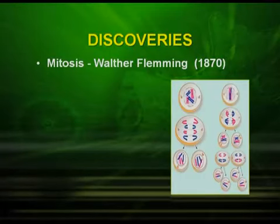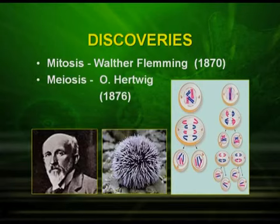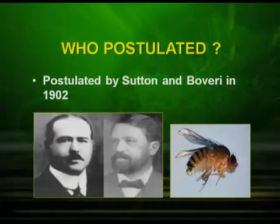Mitosis was discovered by Walther Fleming in 1870, and meiosis was discovered by O. Hertwig in 1876 in sea urchin. At the same time, in 1900, Mendelian inheritance was rediscovered, and people were wondering how we could relate the chromosome with genes. At that particular time, in 1902, Sutton and Boveri postulated the Chromosomal Theory of Inheritance.